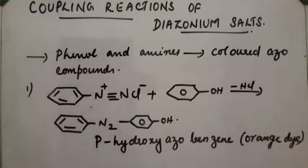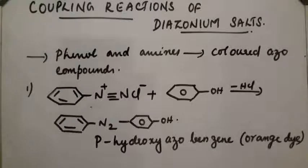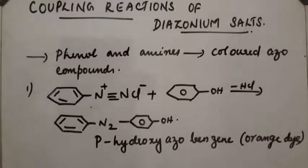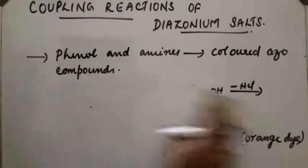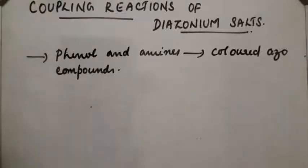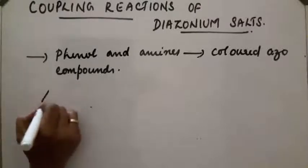So, an ice cold solution of diazonium salt reacts with an alkaline ice cold solution of phenol and gives parahydroxyazobenzene, which is an orange azo dye.